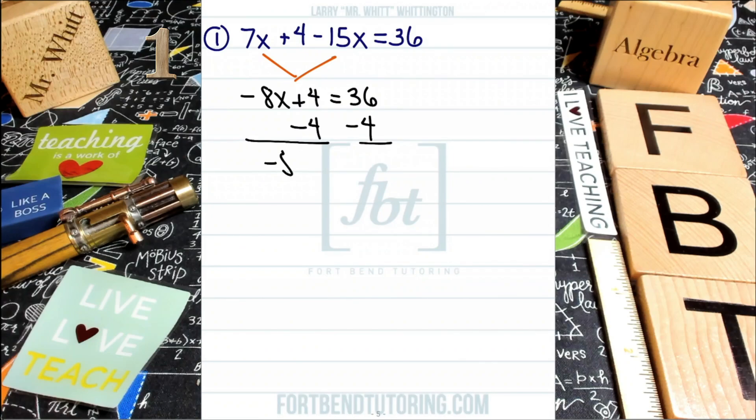We'll be bringing down that negative 8x and combining these additive inverses, the negative 4, the positive 4 together, those will cancel out to 0 and you'll bring down your equal sign and 36 minus 4 gives you a result of 32. From here, we have negative 8x equals 32. That's our simplified equation.